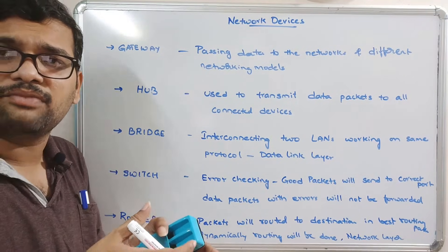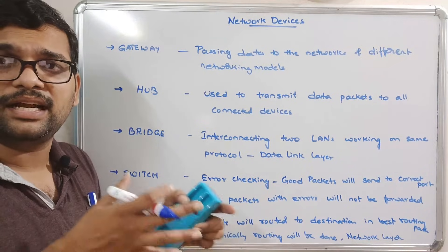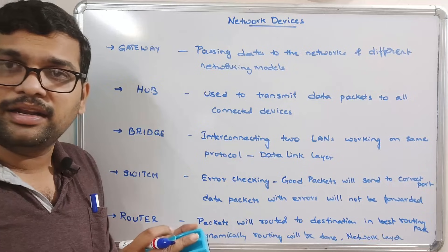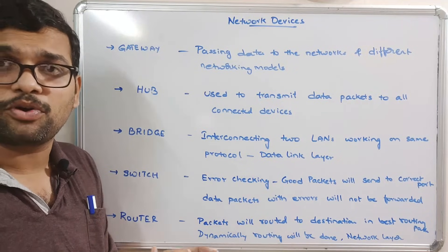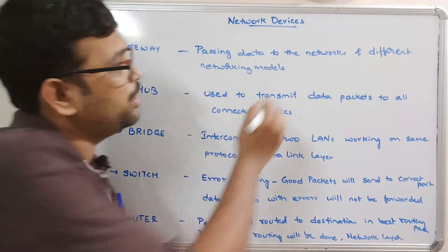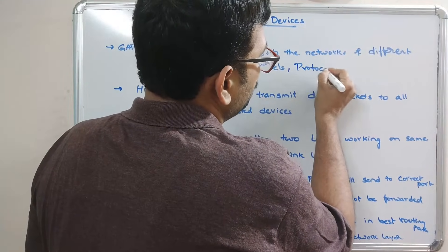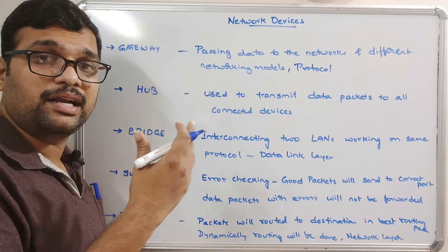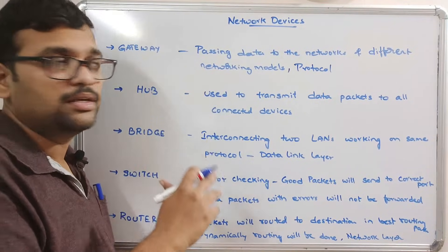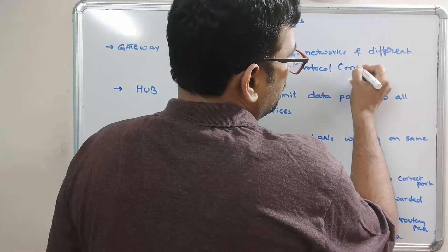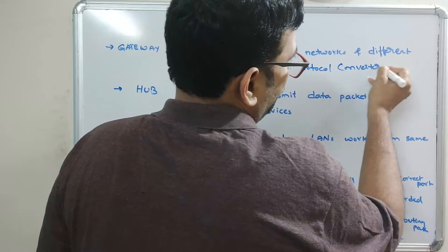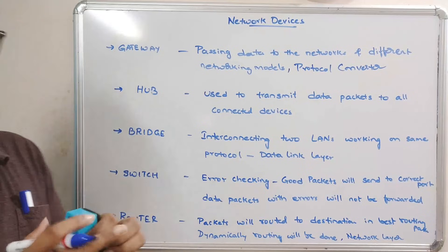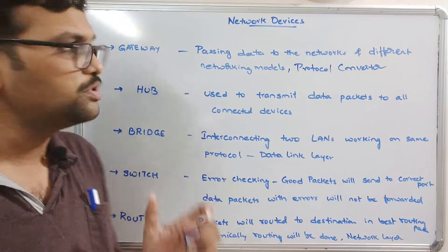Finally, the gateway is used to interconnect two different network models. If you want to pass data from one network model to another, you use the gateway. It is also called a protocol converter because two different protocols are involved and data is communicated between them.